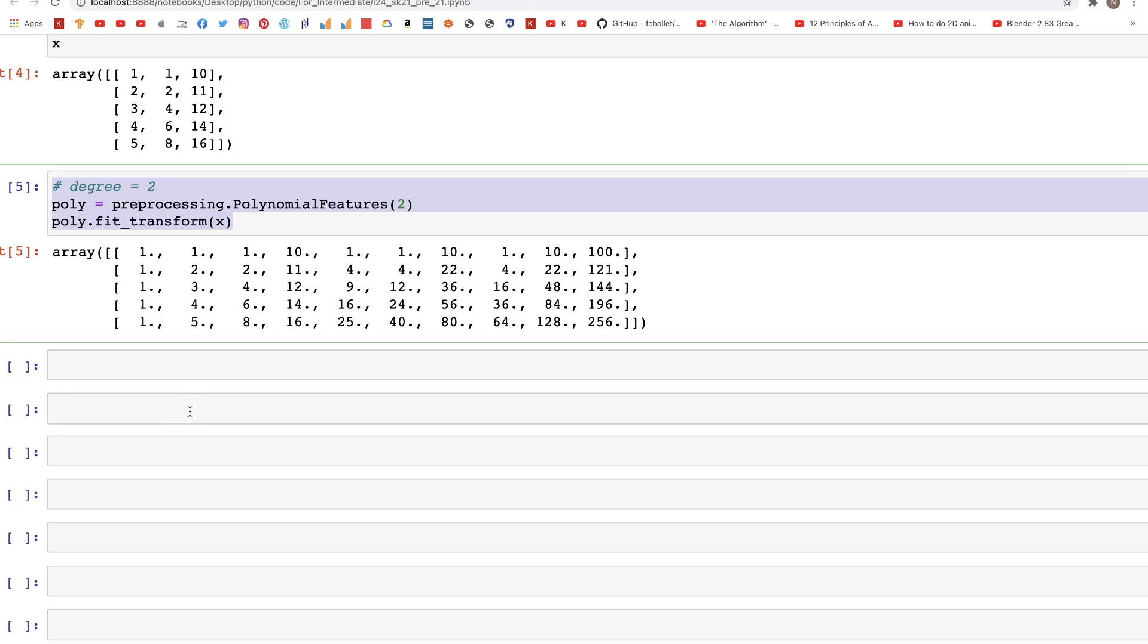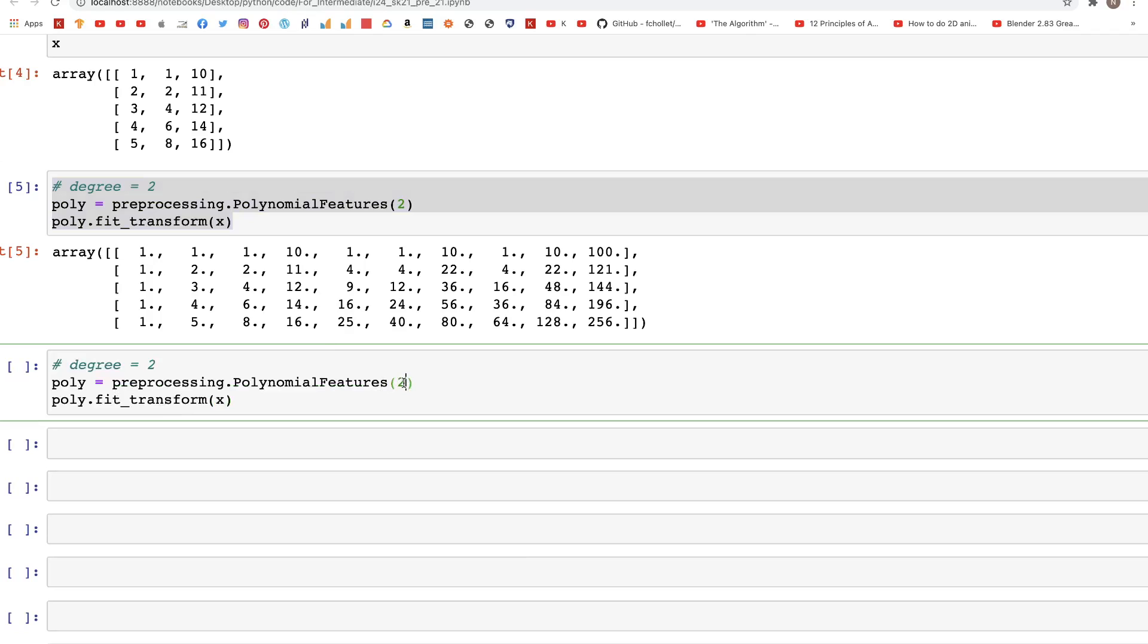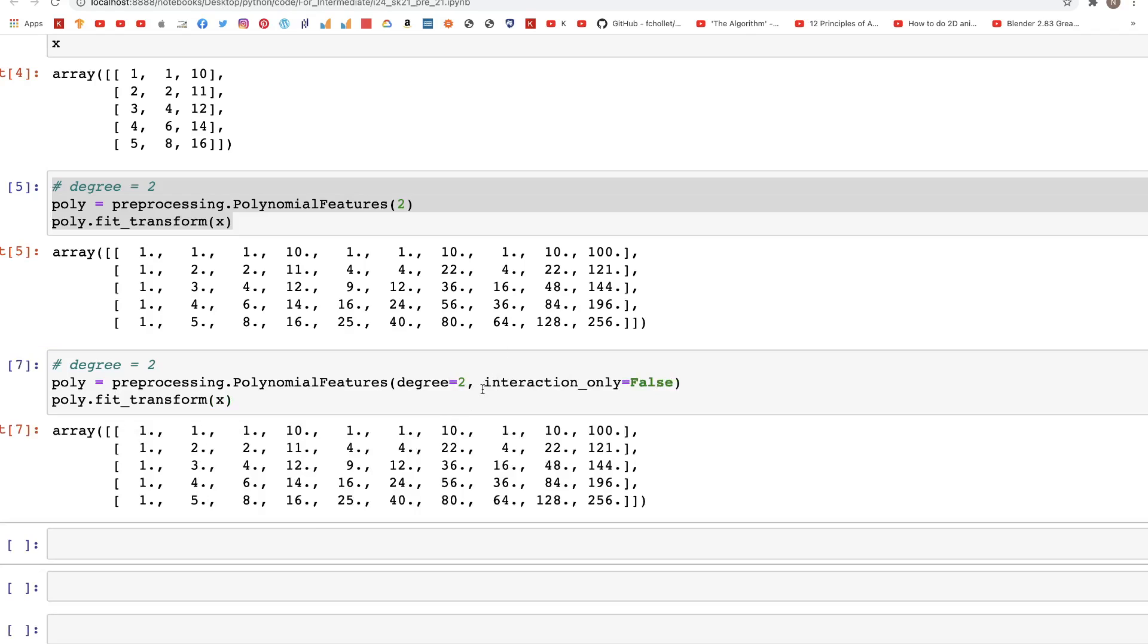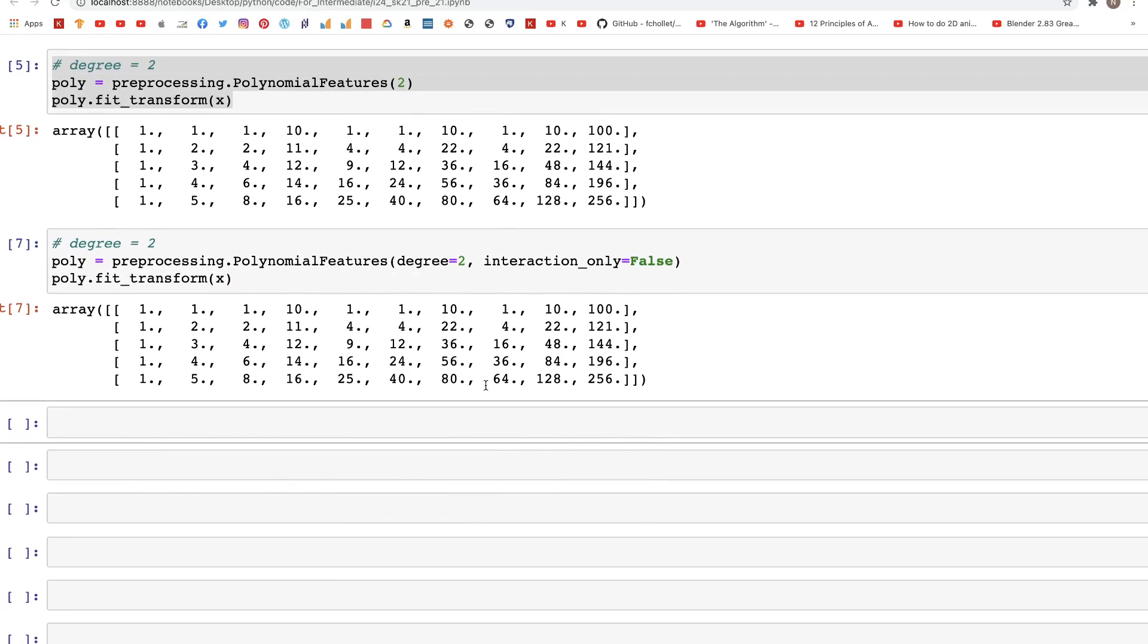This is the same as saying that the interaction_only is set to False. So let's see that. If we go ahead and specify degree=2 and then specify interaction_only=False, we get the same output as we had before.